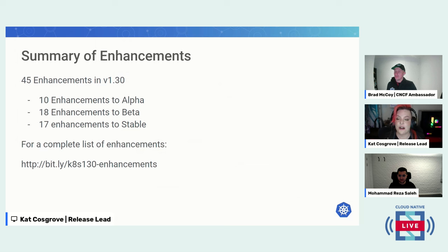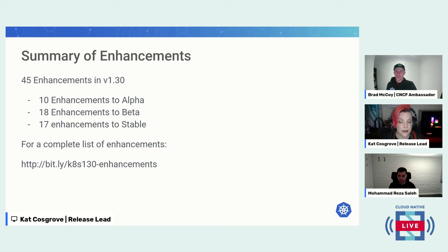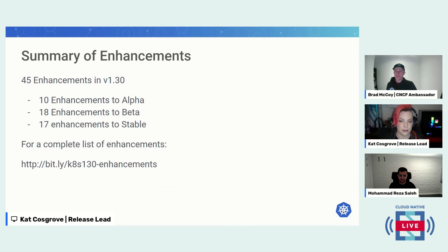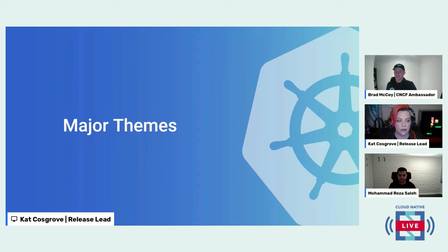A summary of 1.30: we had 45 total enhancements make it across the finish line. 10 of those were net new alpha features, 18 were graduations to beta, and 17 were graduations to stable. If you want to go look at a complete list, there's a bit.ly link on the slide. That will also show enhancements that were lost at code freeze, which may be a sneak peek of what you might see in 1.31. Let's get into the major themes — the biggest and most impactful changes in 1.30.